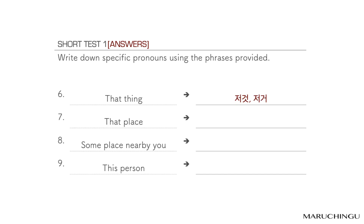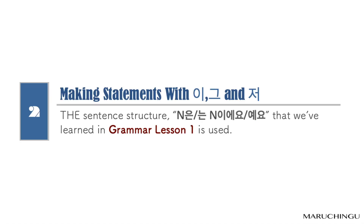6번: 저것, 저거. 7번: 저것. 8번: 그곳. 9번: 이분, 이사람. Making statements with 이, 그, 저.